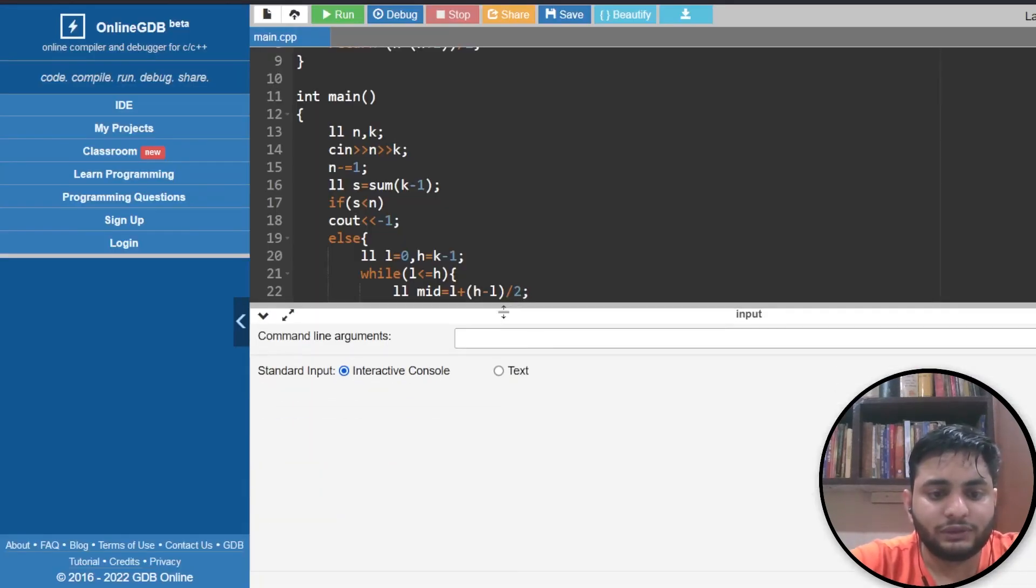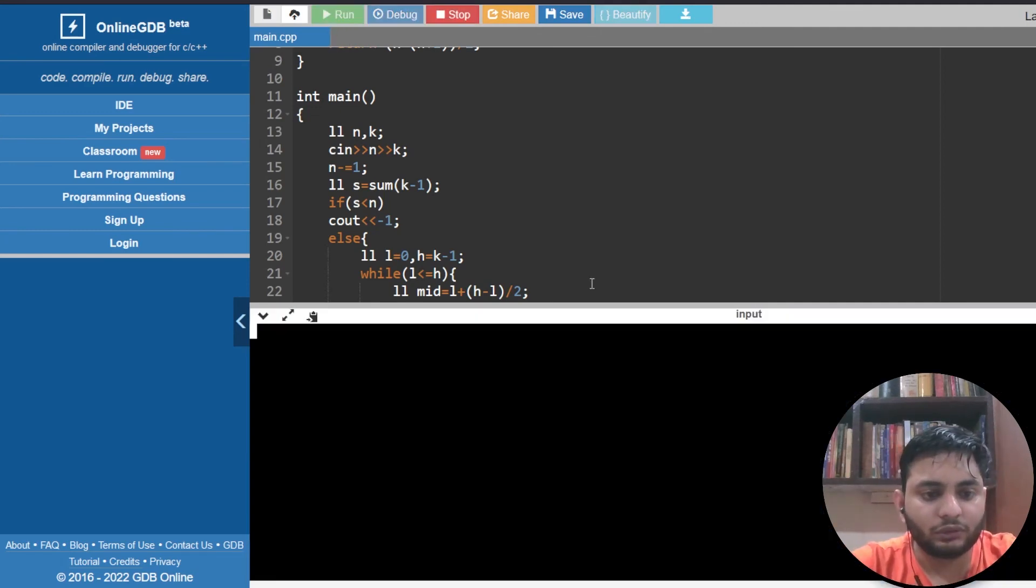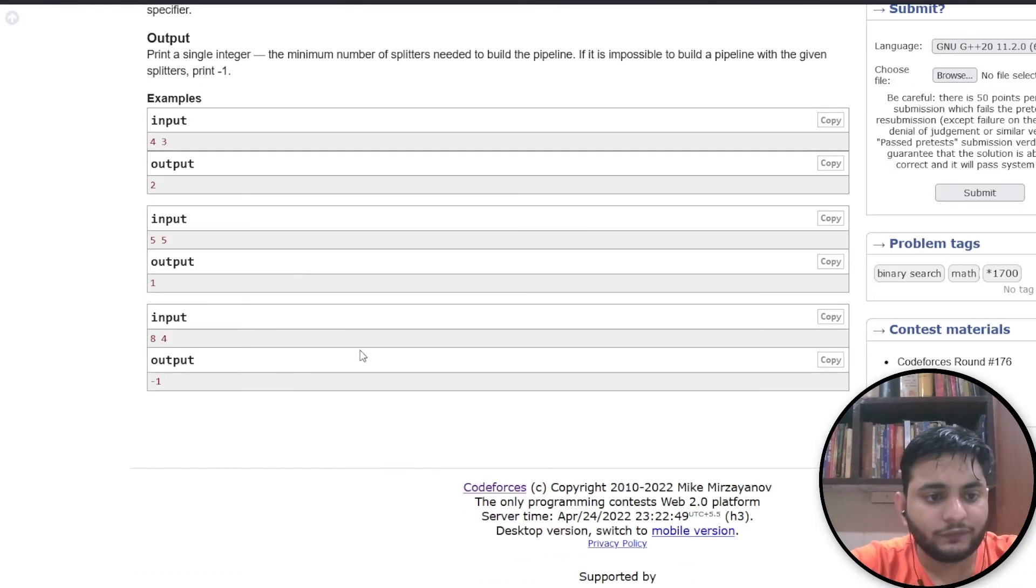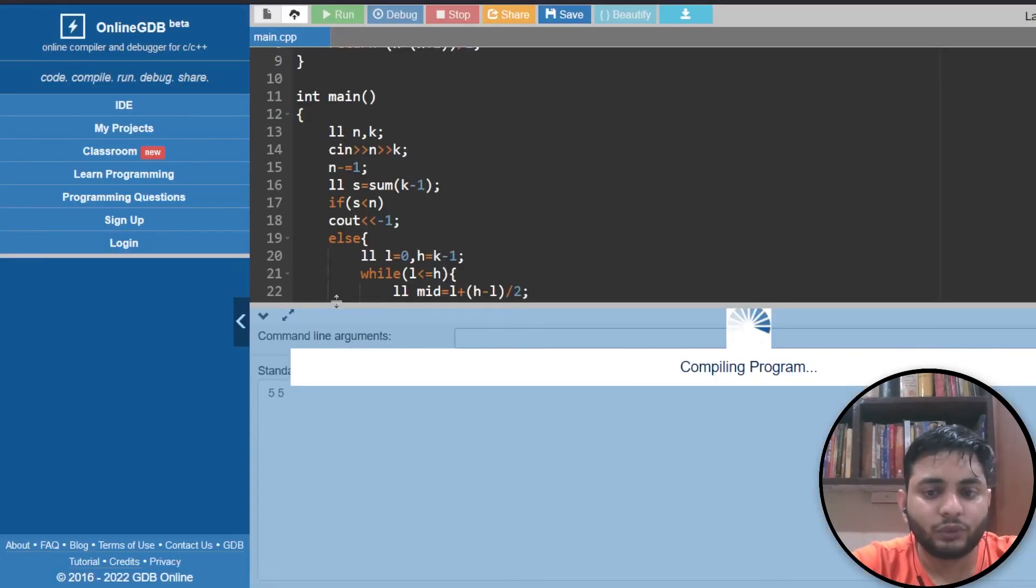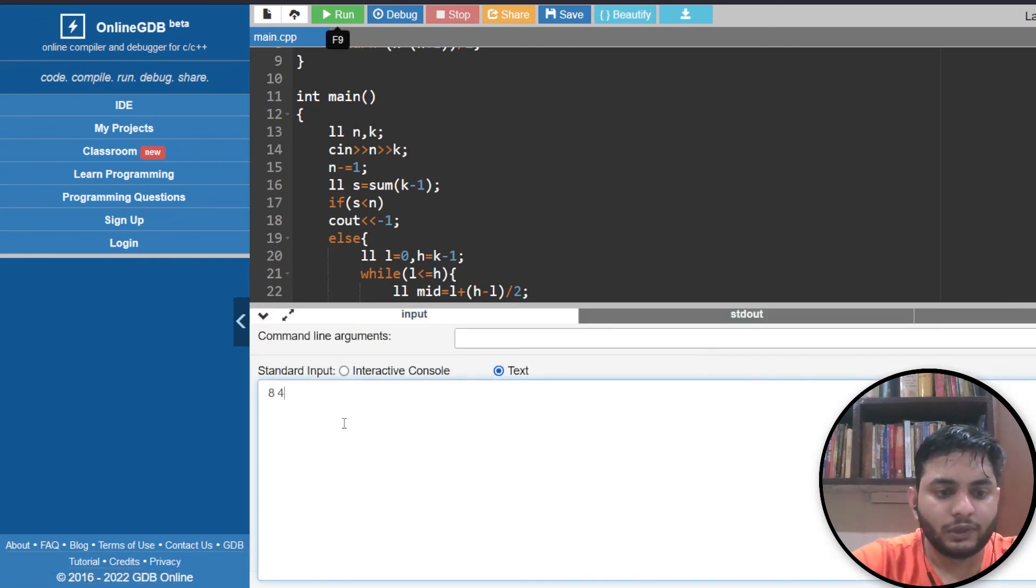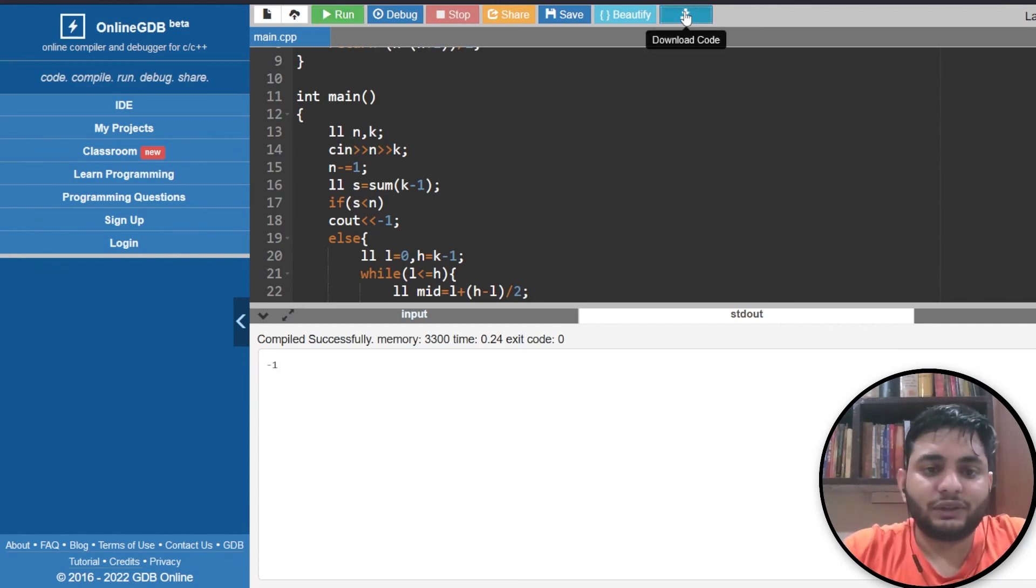Let's run this and check if it's correct. For input 4,3 the answer is 2 which is correct. For 5,5 it's 1. For 8,4 it's minus 1, which is also correct. Perfect! Let's download the code and submit.